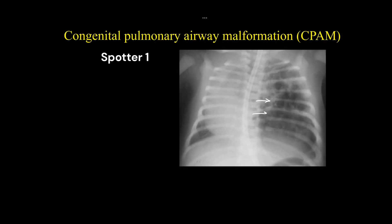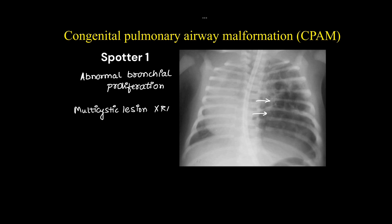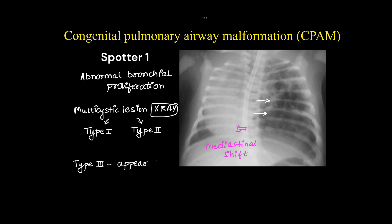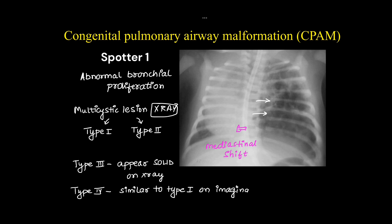The first spotter was a case of CPAM or CCAM — congenital pulmonary airway malformation — in which there is abnormal bronchial proliferation. It appears as a multicystic lesion on x-ray. Type 1 and type 2 appear as multicystic lesions with or without mediastinal shift. Type 3 appears solid on x-ray, and type 4 is similar to type 1 on imaging, making differentiation difficult.